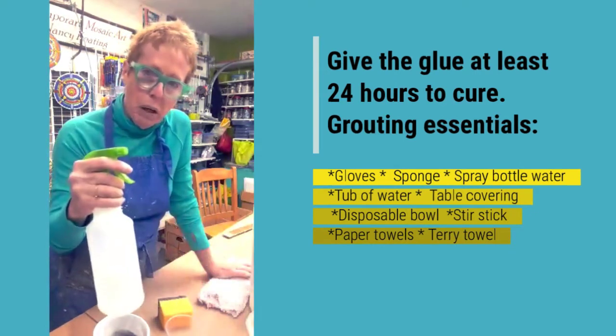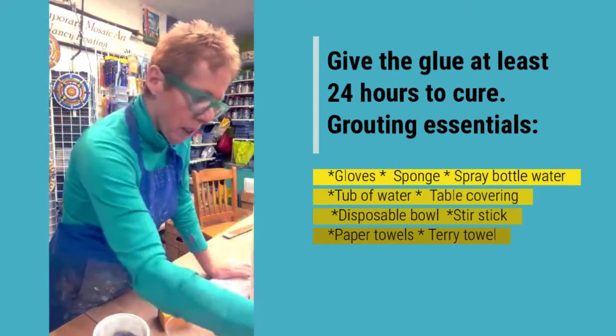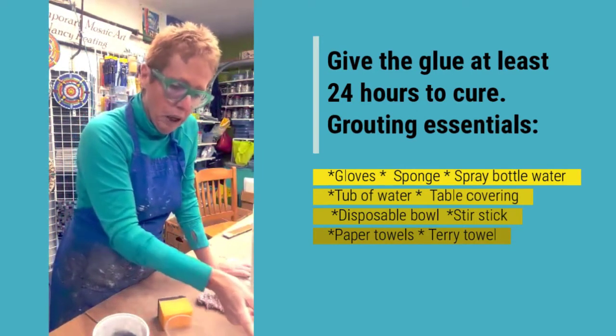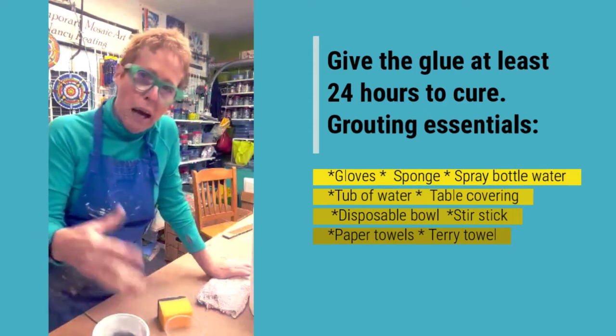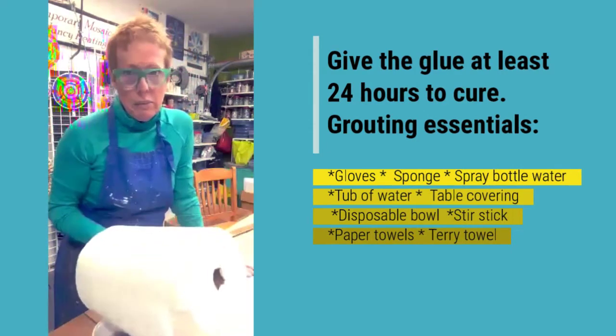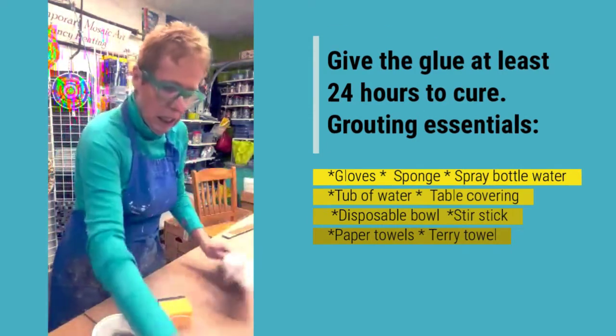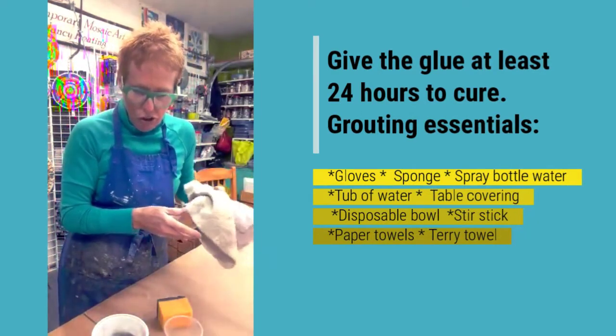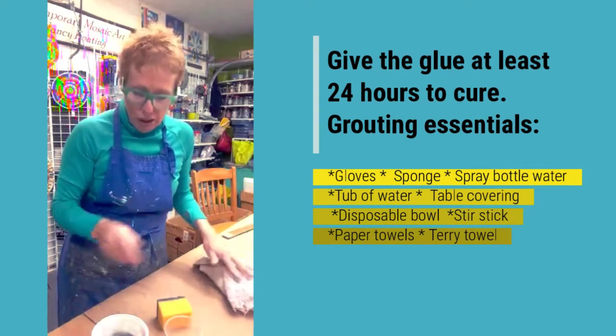A spray bottle of water just in case I need it. A bucket of plain water here just to wash off the back of the mosaic. Lots and lots of paper towels and some old terrycloth towels for buffing. So that's what you're going to need to start to grout.